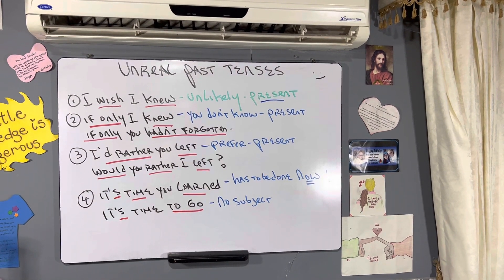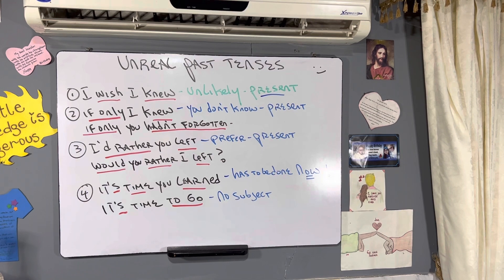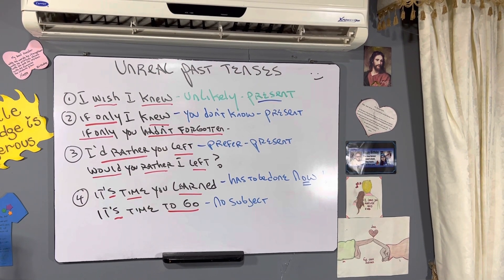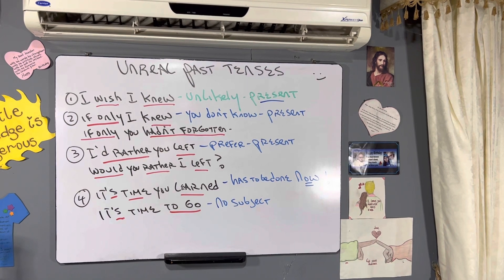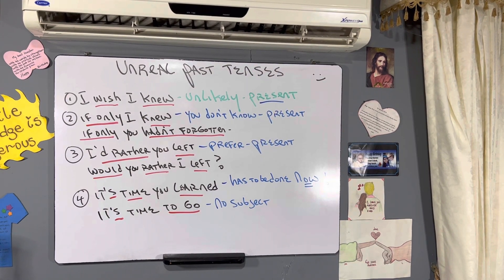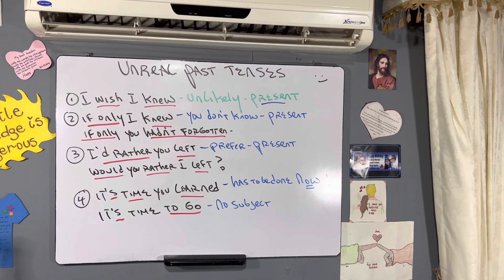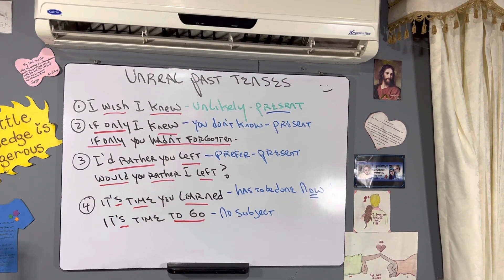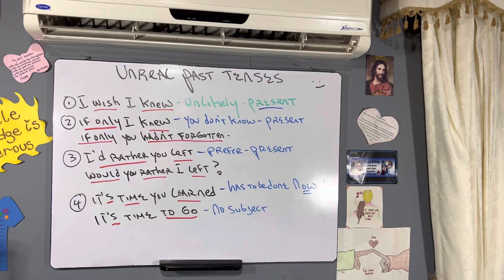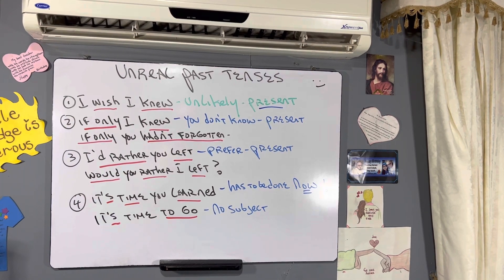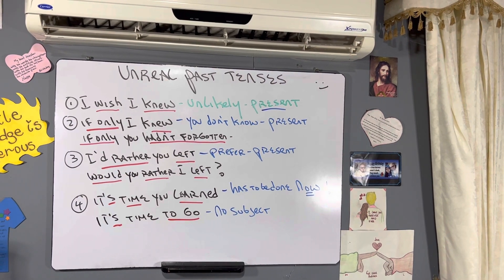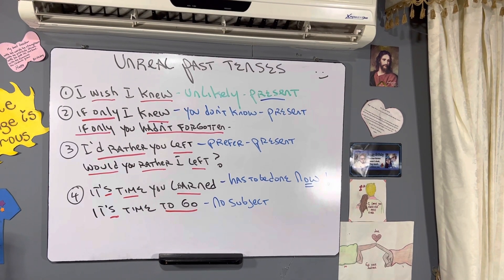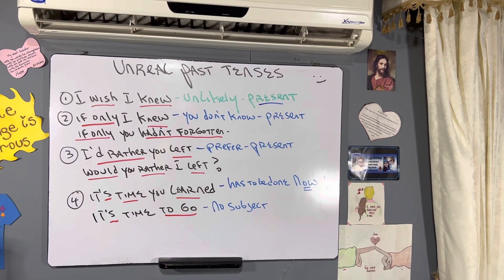Unreal past tenses for unreal sentences. Example number one is with wish. I wish I knew. When you use the word wish — subject, simple past — even though the verb is in the past, you're talking about the present. It's unlikely. It's unreal. I wish I knew. You don't know, but the verb 'knew' is in past, talking about the present.